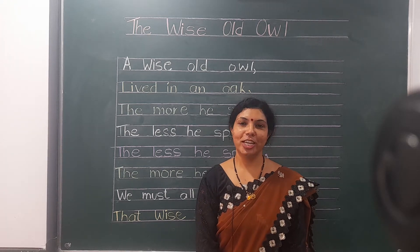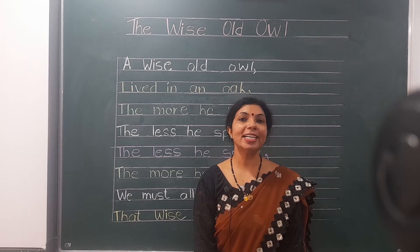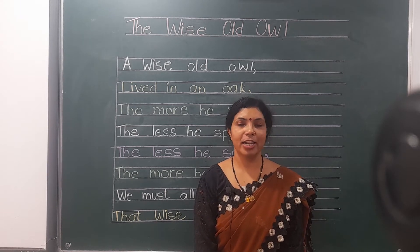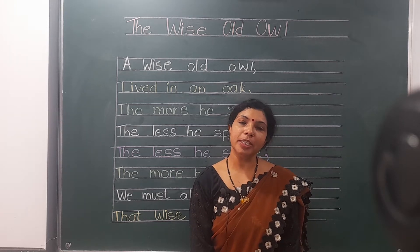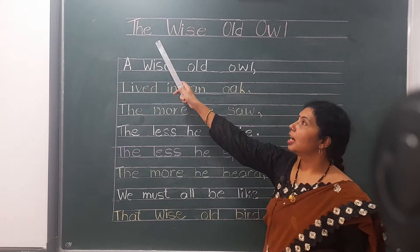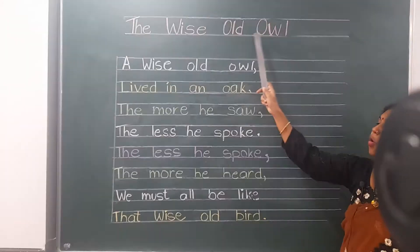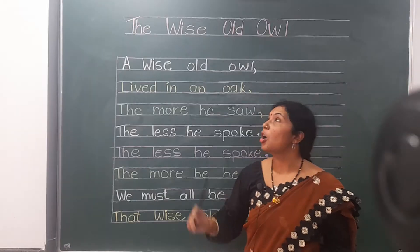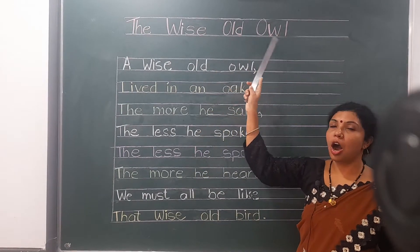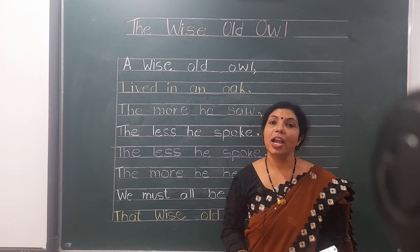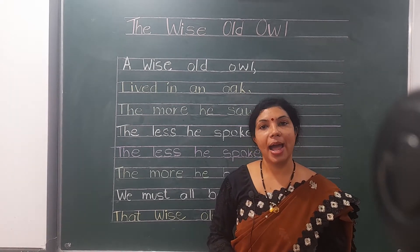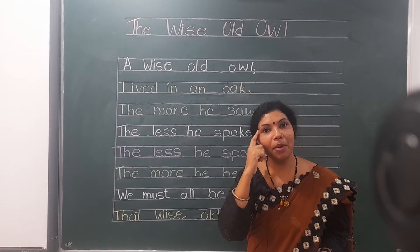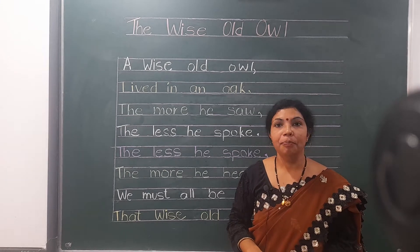Hello all of you! Today we are going to learn a new English rhyme, and this rhyme is very beautiful and about a bird. The topic is the wise old owl. In this rhyme we will learn about an old owl which is wise — very buddhiman. Okay, then let's start.